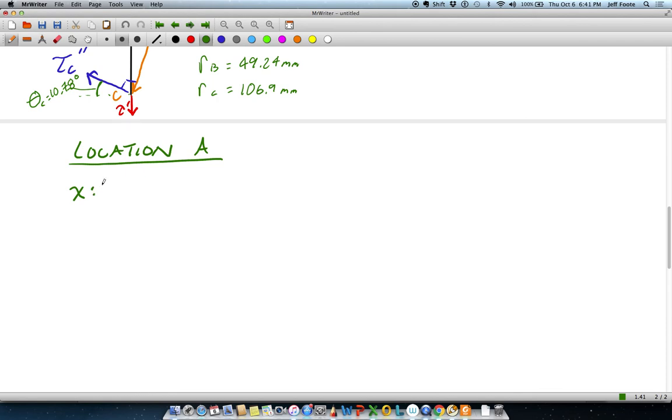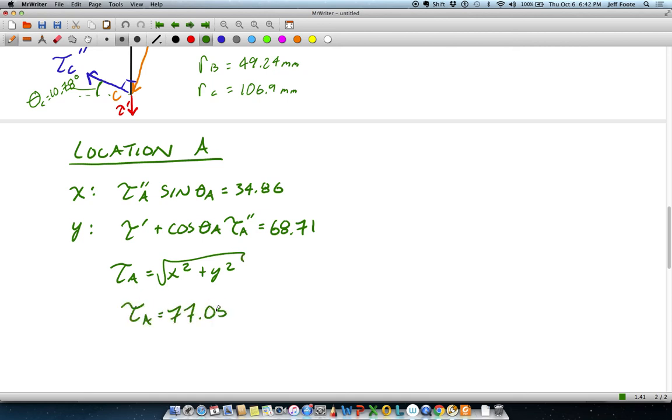So I want to calculate the x and y components. At A, we'll have the torsional shear stress times the sine of theta A, which is 34.86. In the y direction, we'll have the direct shear, Tau prime plus the cosine of theta A times Tau A double prime, which is 68.71. And to calculate Tau A, we're taking x component squared plus the y component squared root for a Tau A value of 77.05 MPa.